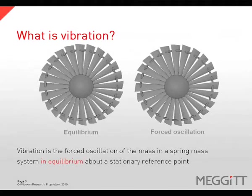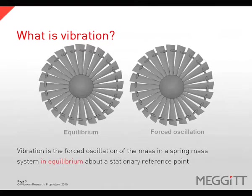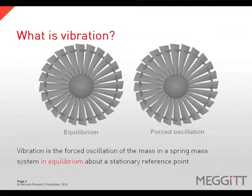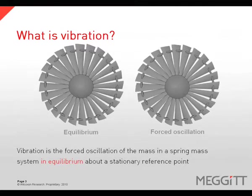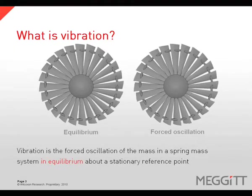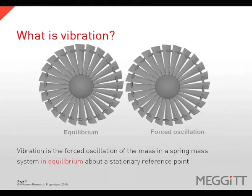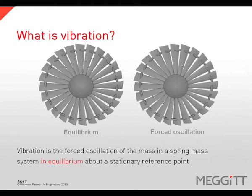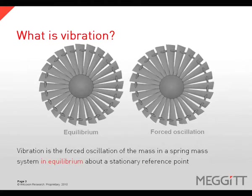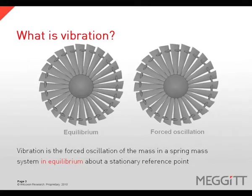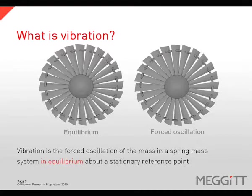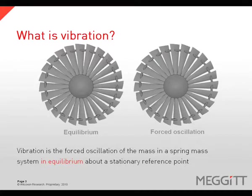Vibration is the forced oscillation, or the back and forth motion, of a mass in a spring-mass system in equilibrium about a stationary reference point. In our example, the stationary reference point is the shaft of our rotor.